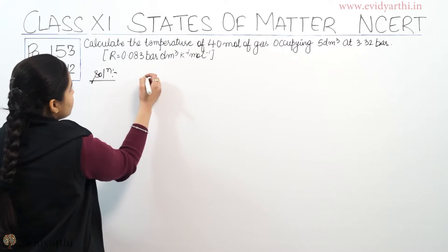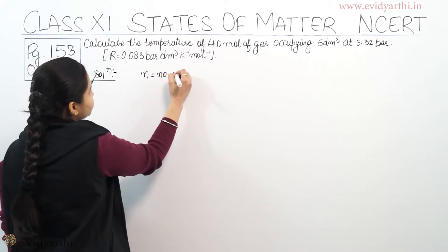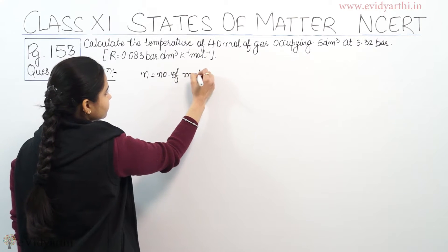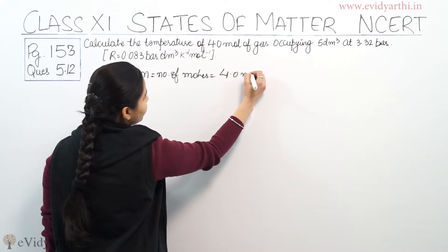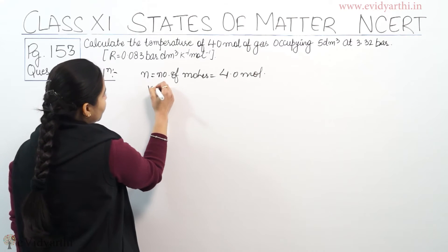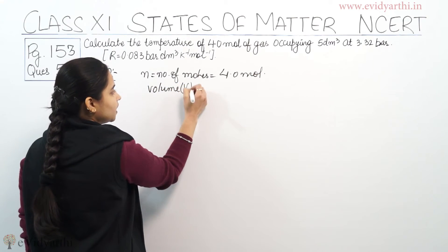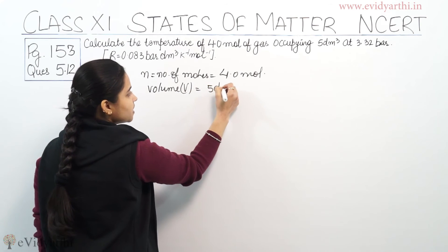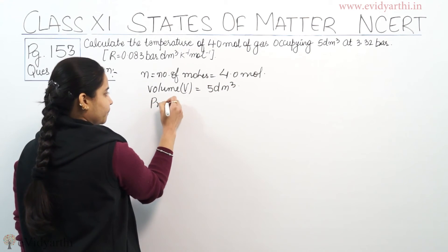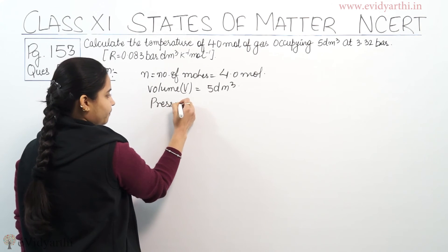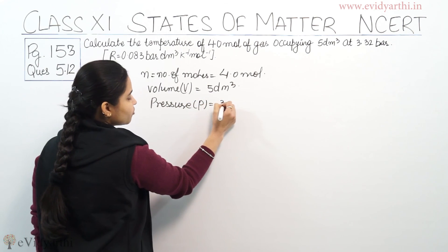So what is given to us: N, which is number of moles, is equal to 4.0 mole. Volume V is equal to 5 decimetre cube. Pressure P is given as 3.3...